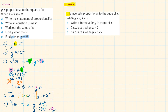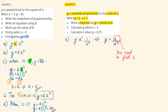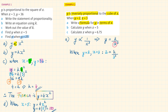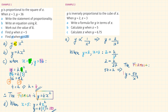Example 2. Y is inversely proportional to the cube of X. When Y is equal to 2, X is equal to 3. Write a formula for Y in terms of X. We start by writing out the equation: Y equals K over X cubed. To find K, we use the given values — when Y is equal to 2, X is equal to 3. Replacing the values: 2 is equal to K over 3 cubed, so 2 equals K over 27. Multiplying both sides by 27, we have 54 equals K. So the formula is Y equals 54 over X cubed.